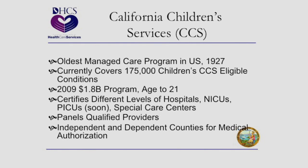Proudly, CCS is the oldest managed health care program in the United States, starting in 1927. Currently it covers 175,000 children that have CCS-eligible medical conditions. We don't cover the whole patient — we just cover those conditions, so you've got fragmentation by definition, which we're working on getting rid of. It's not a small program — it's an insurance company, a $1.8 billion, almost $2 billion program, up to age 21. We certify all the different levels of pediatric care including the providers. To be in CCS, you have to have three criteria: qualify medically, residential eligibility, and financially.